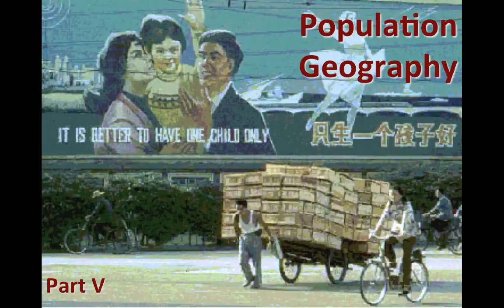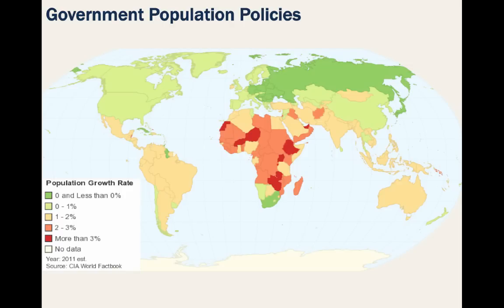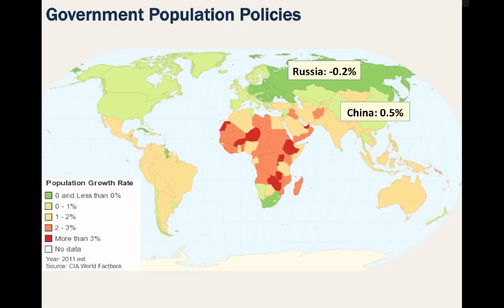Welcome to Population Geography Part 5. Let's take a look at the population explosion by investigating this map showing population growth rates around the world. Looking at some of these numbers, China has a growth rate of 0.5%, in large part due to restrictive population policies we will talk about later. Russia has a 0.2% decline in population due to low growth rates but also due to emigration out of the country.